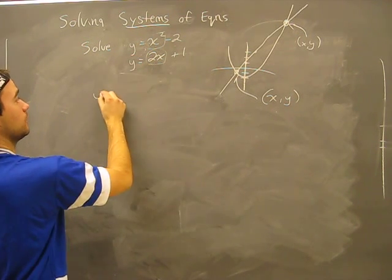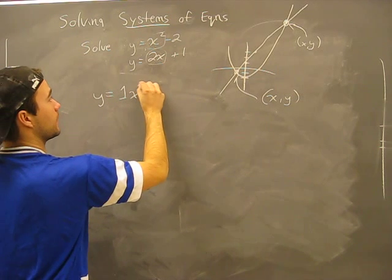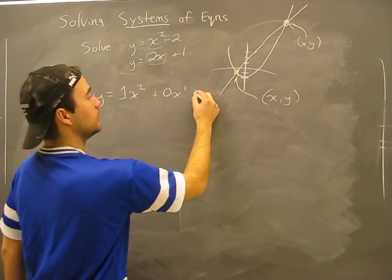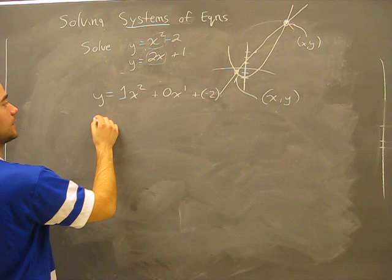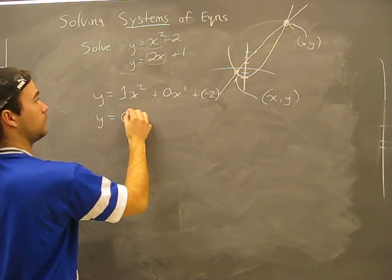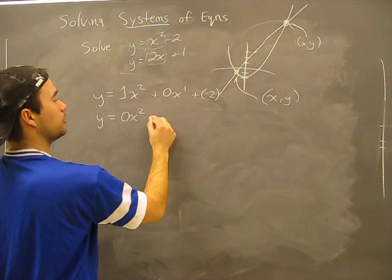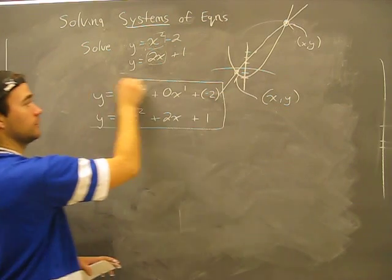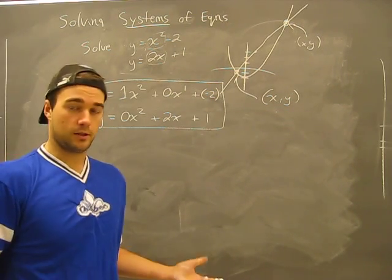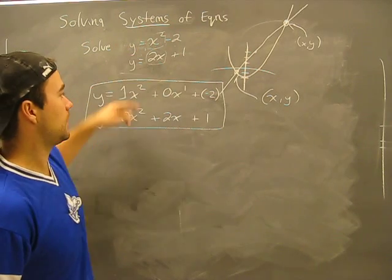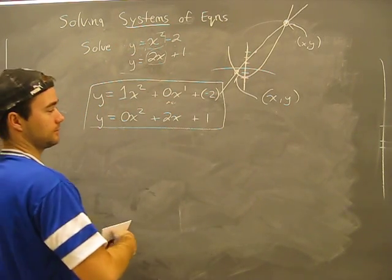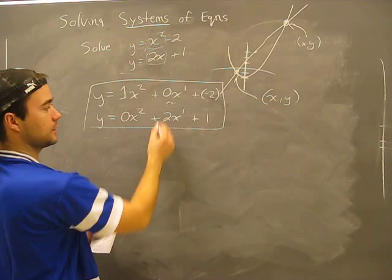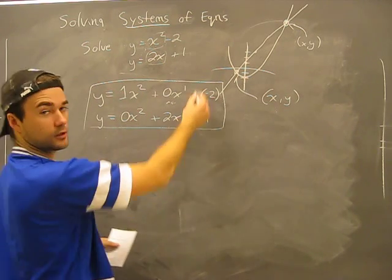Here's what you really have. Y equals 1x squared plus 0x to the first — not even listed because we're smart math people — plus negative 2. And the second equation: 0x squared, because it's not listed, plus 2x plus 1. This is what the real system of equations looks like — just written in smart, lazy math person terminology. We don't write what we don't have. This shows proper alignment of x squared terms, x to the first terms, and the constants.